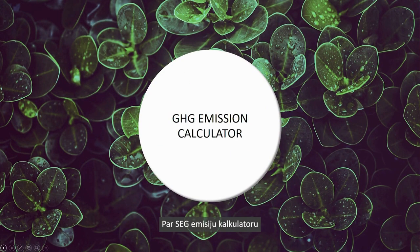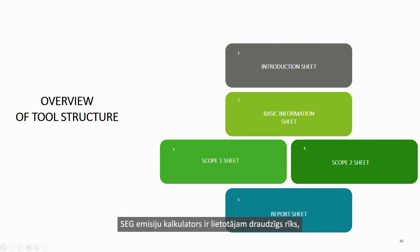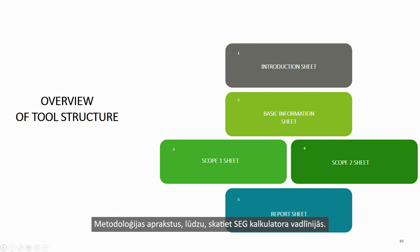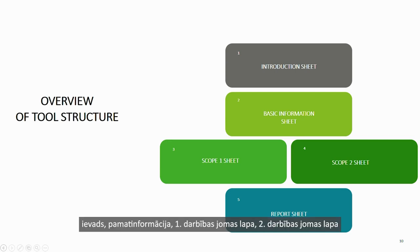Now we move to explore the GHG Emission Calculator step-by-step. The GHG Emission Calculator is a user-friendly tool designed to estimate annual greenhouse gas emissions for small and medium businesses, as well as organizations in general. Its goal is to simplify the process of calculating emissions in Scope 1 and 2. The calculator is divided into five sheets: the Introduction, Basic Information, Scope 1, Scope 2, and Report, where the results of emissions will be visible.